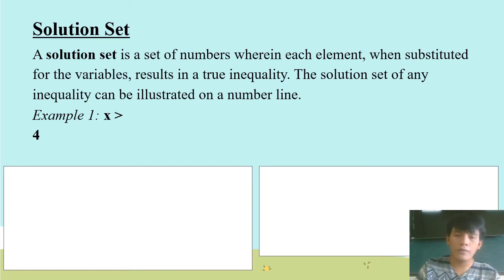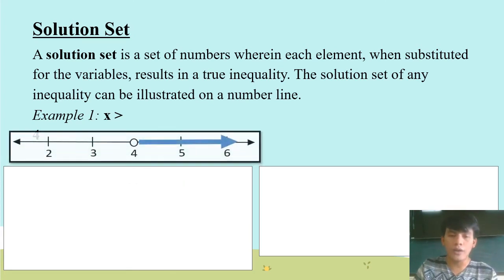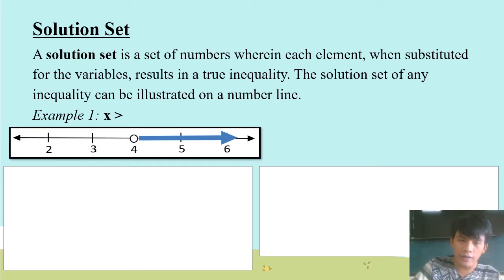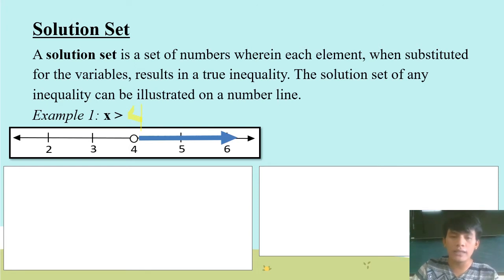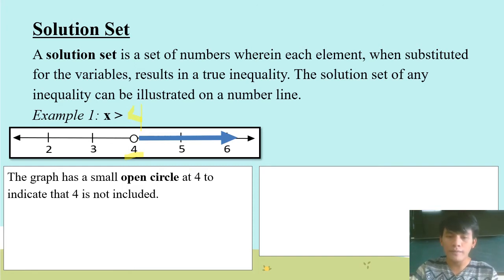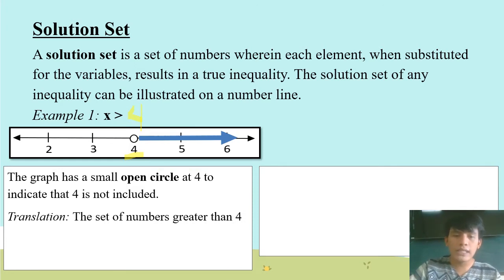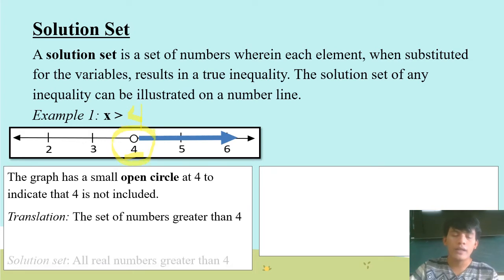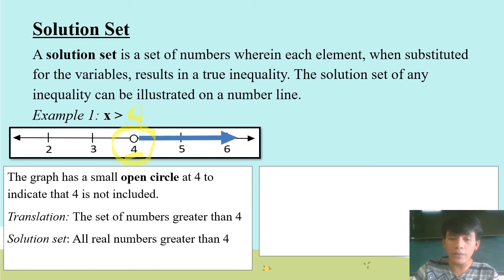Example 1: x greater than 4. As you can see on the number line, the graph has a small open circle at 4 to indicate that 4 is not included. The set of numbers greater than 4 — the solution set is all real numbers greater than 4, because the graph is going to the right.